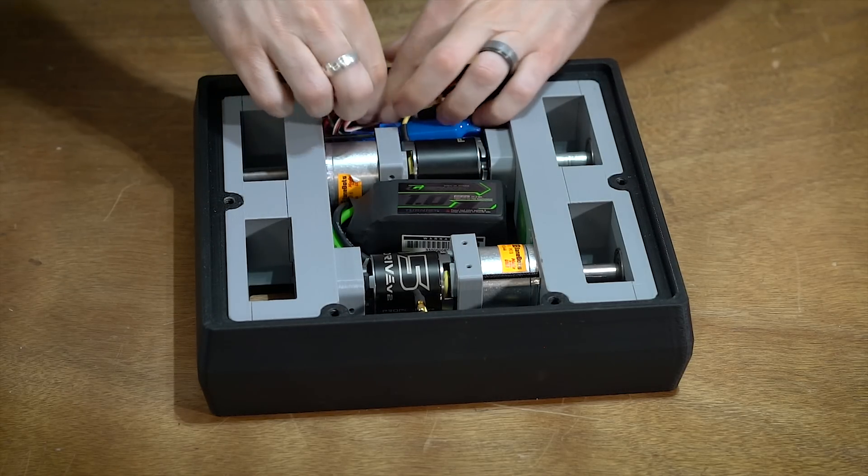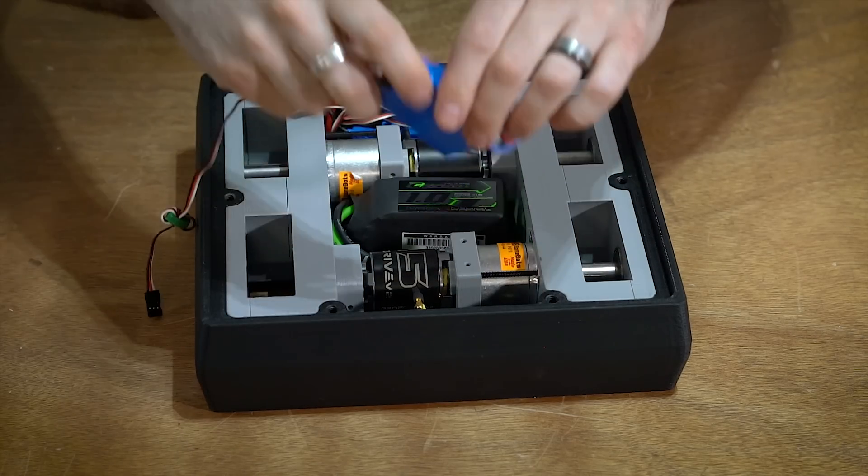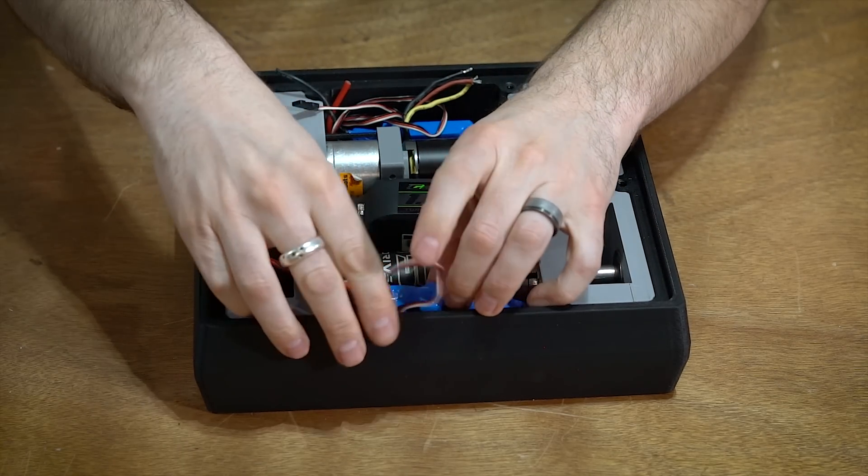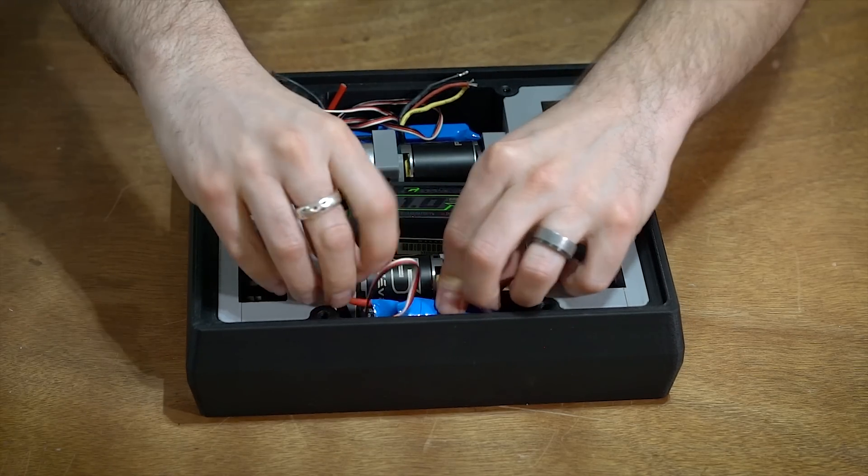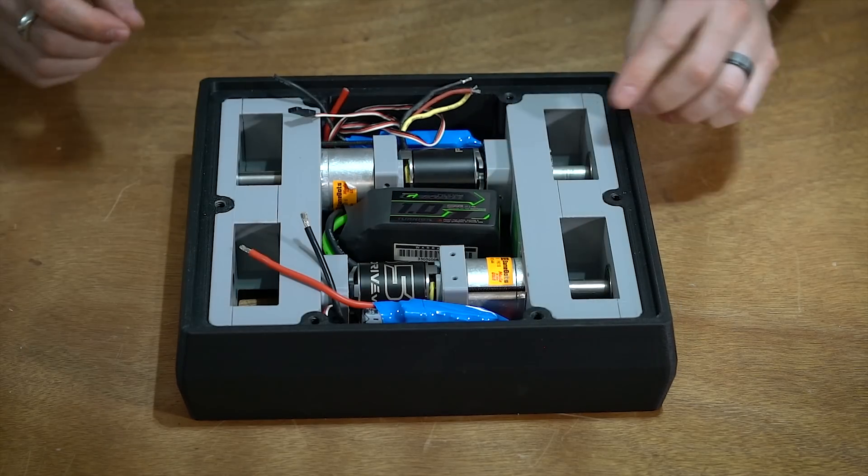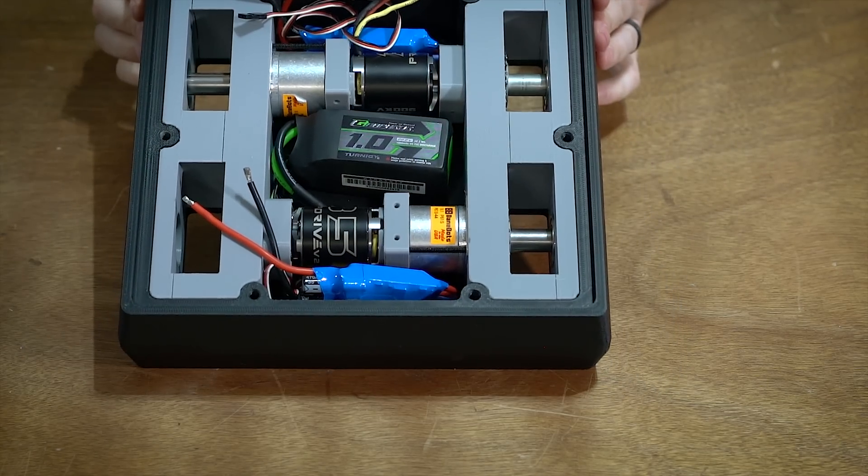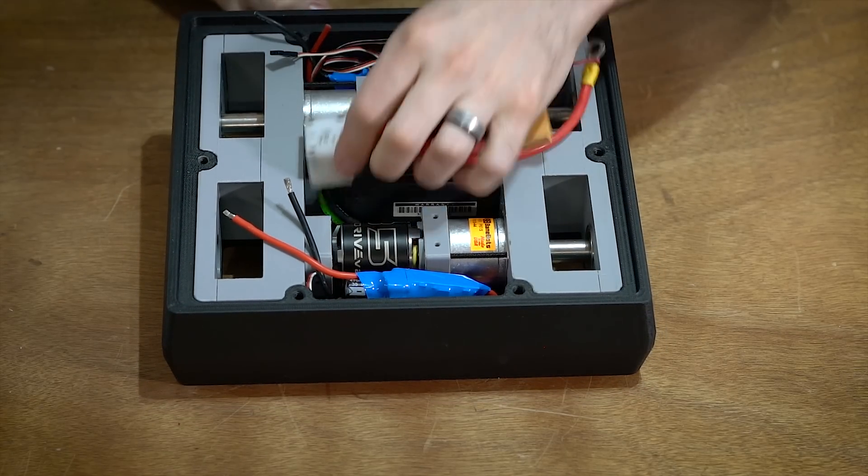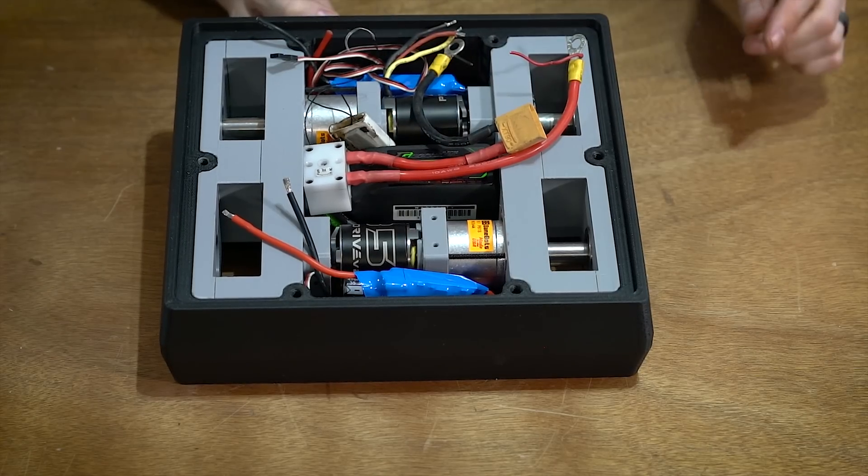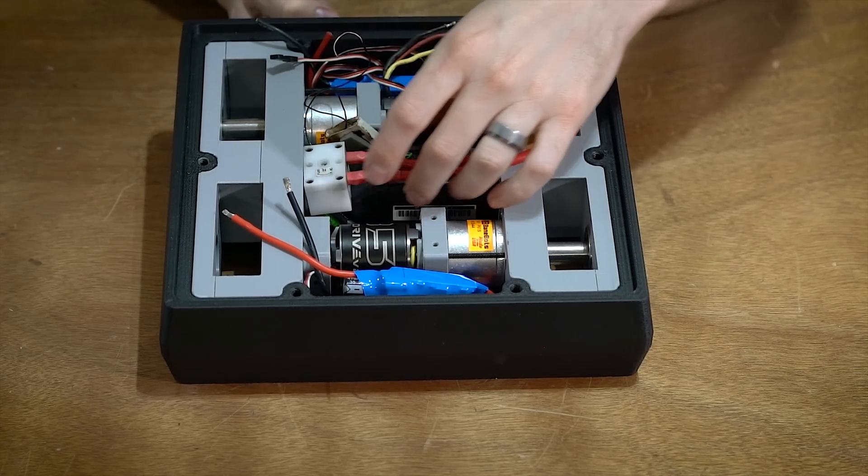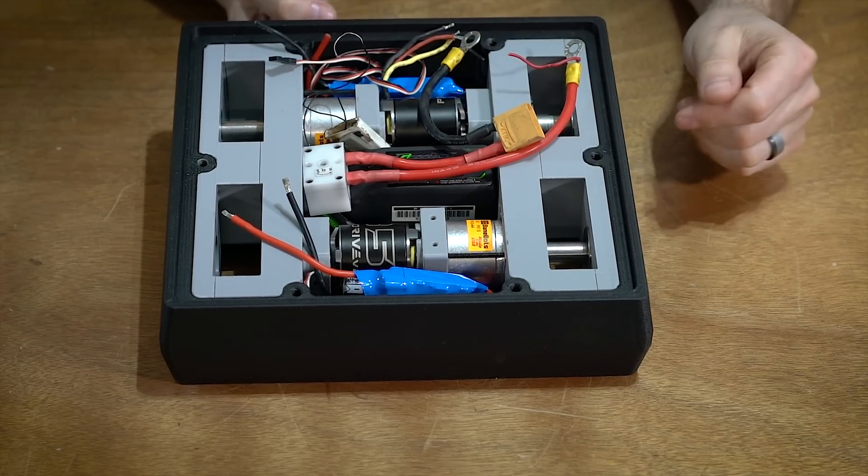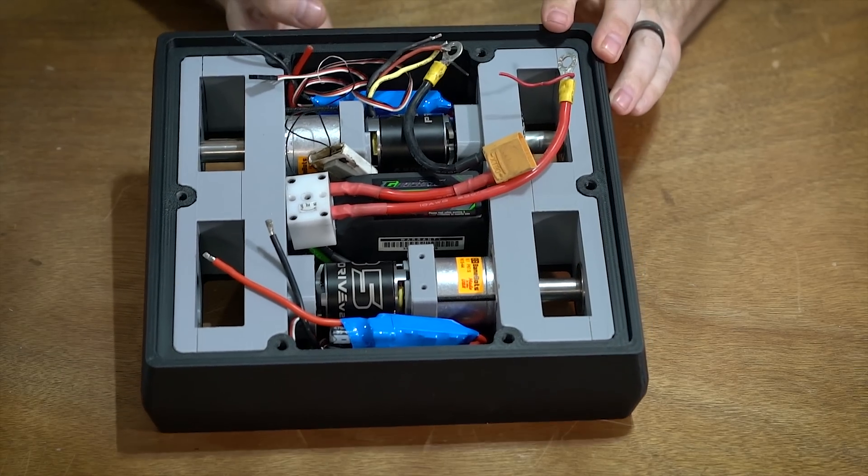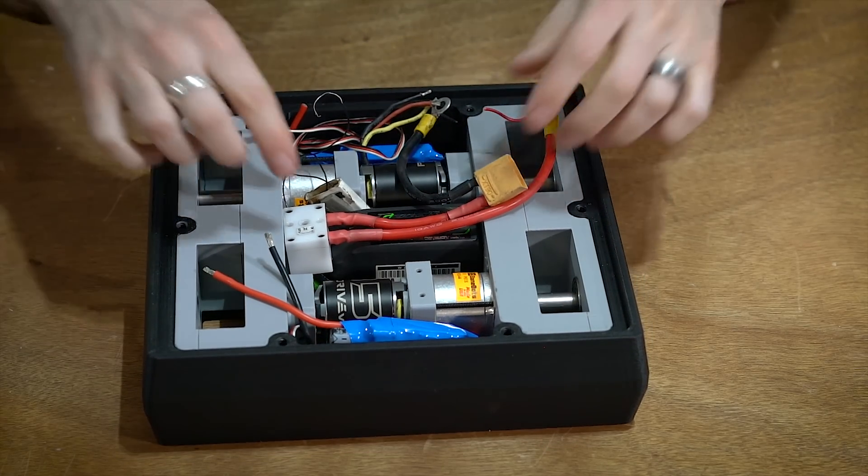So we've got an ESC that will sit right there, another ESC that sits inside here like that. Wires can go up and over. And that means in this little cavity right inside there, I need to fit the battery, the switch, the radio, and all of the power distribution that goes inside there. So there's a lot to fit inside of here.